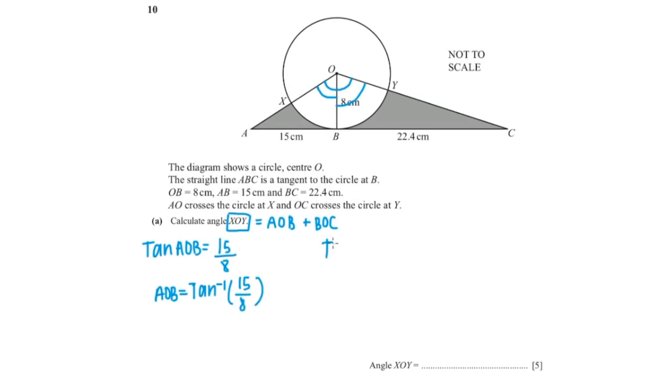And for our angle BOC it is tangent BOC equals to the opposite which is 22.4 over the adjacent which is 8. So angle BOC equals to the inverse of tan 22.4 over 8.